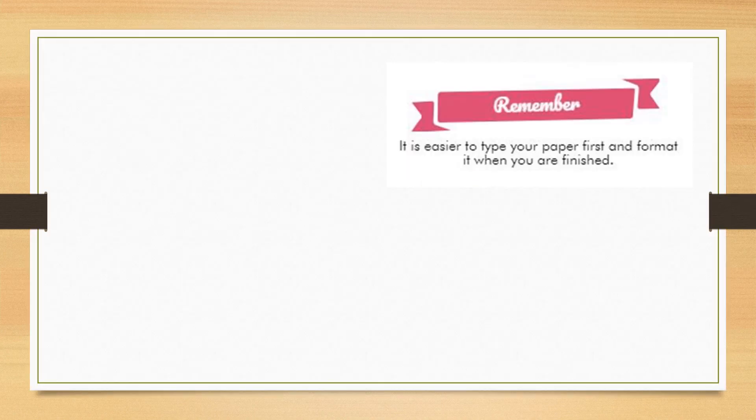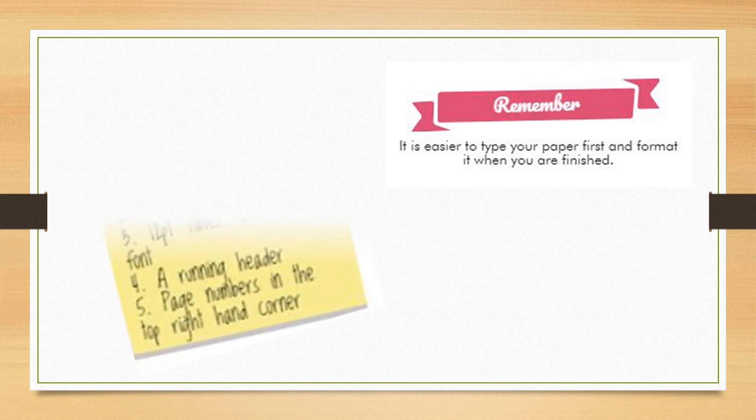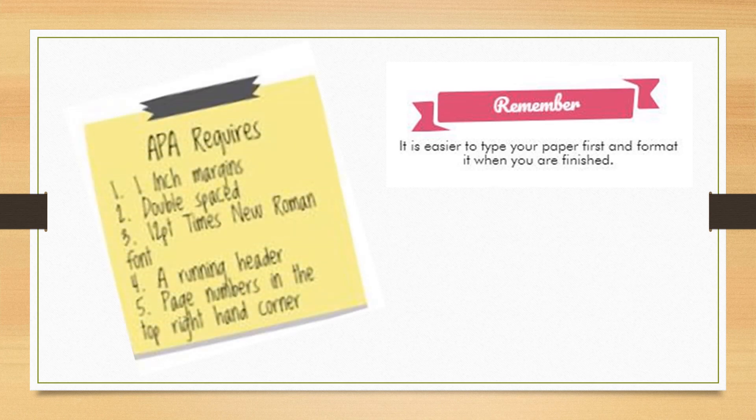A properly formatted paper has 1-inch margins, type that is double-spaced, with font that is size 12 and easy to read, typically Times New Roman. Each page will have a running head and page numbers.